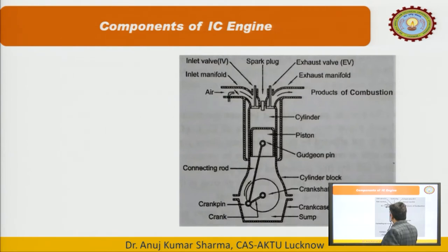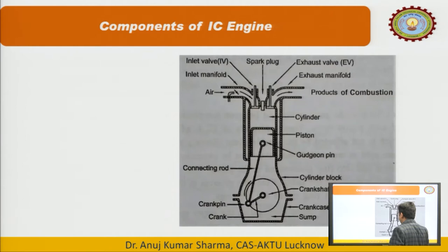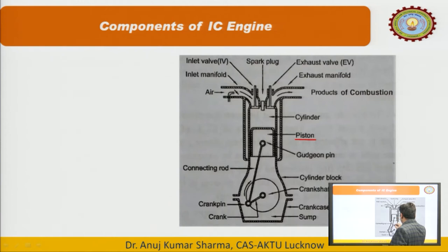We are discussing the components of IC engines. We have different components. The important one is the cylinder, in which the combustion takes place. Then the piston, which reciprocates inside the cylinder. Then there is the connecting rod. The piston and connecting rod are connected with the help of the gudgeon pin.